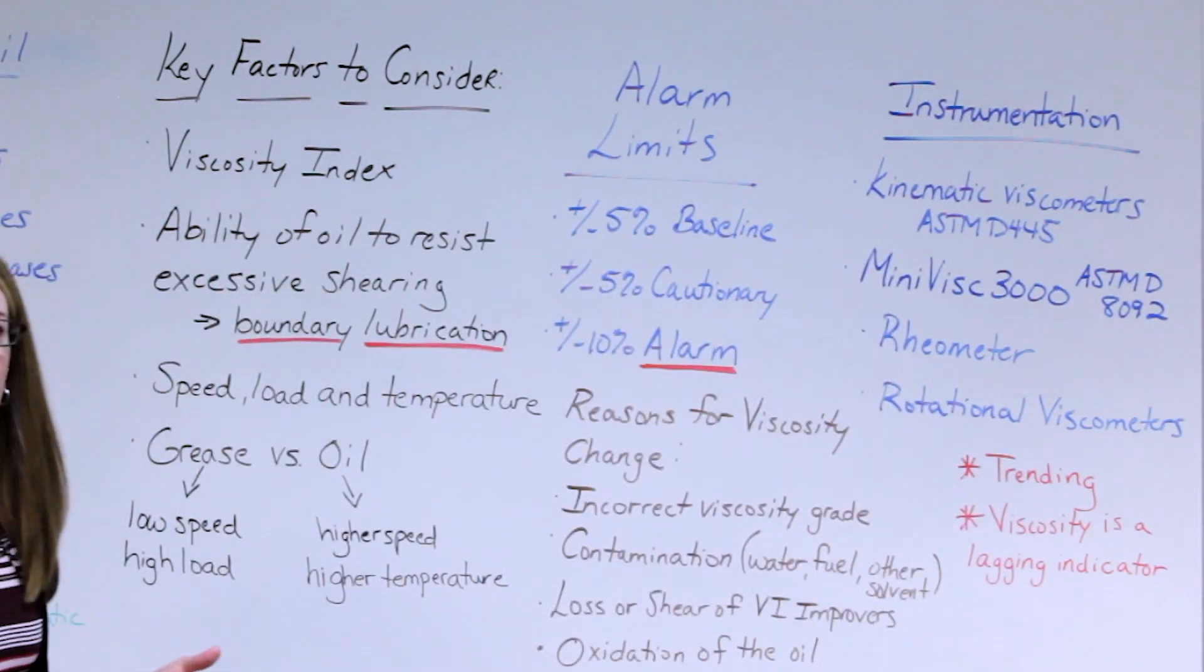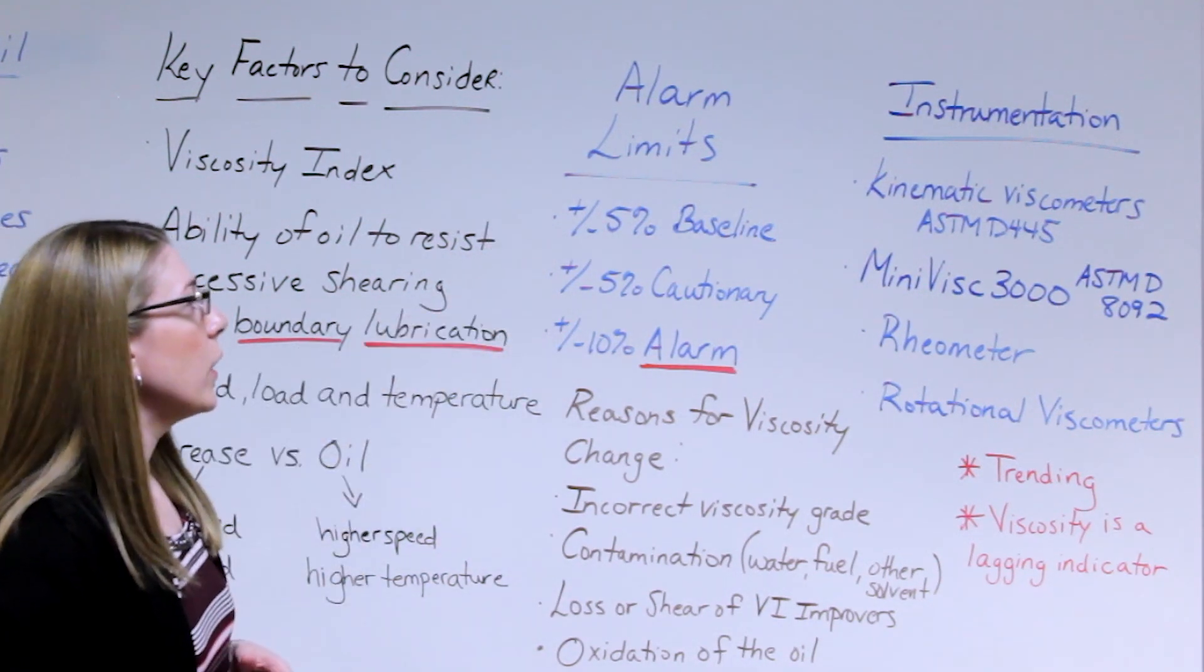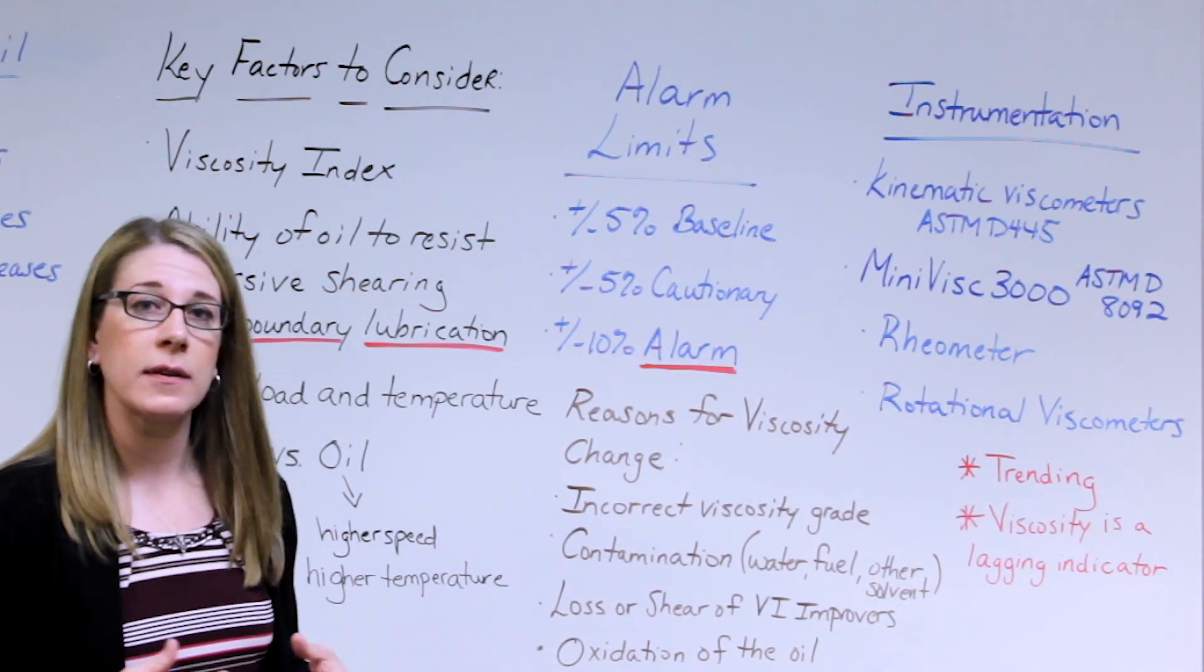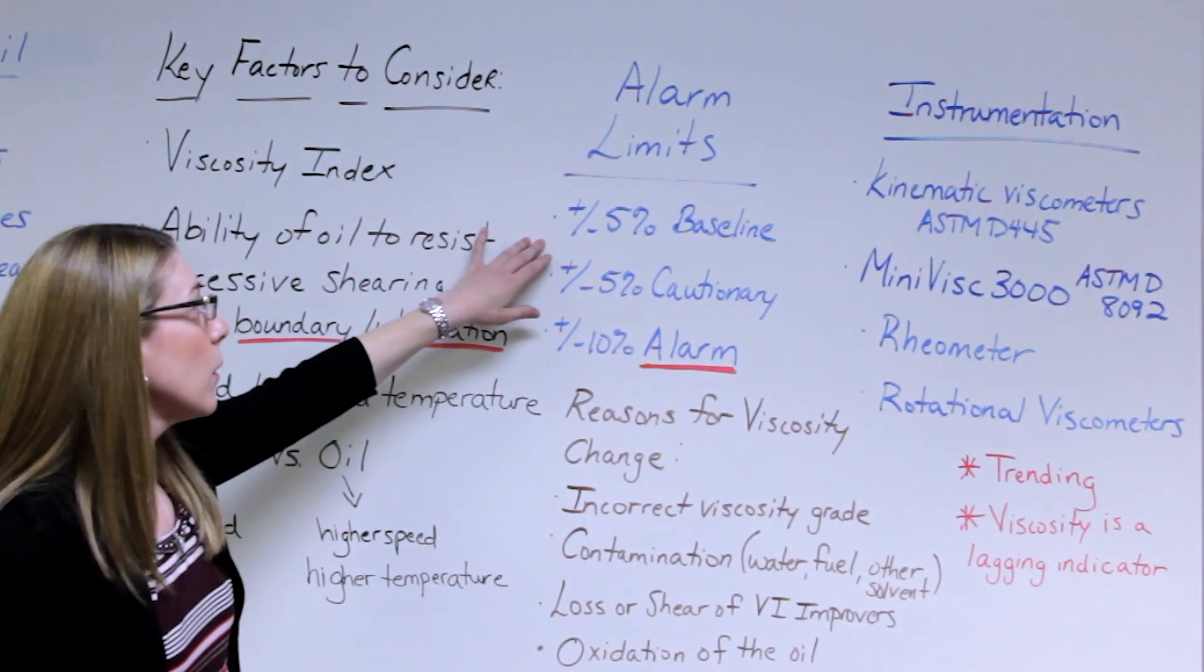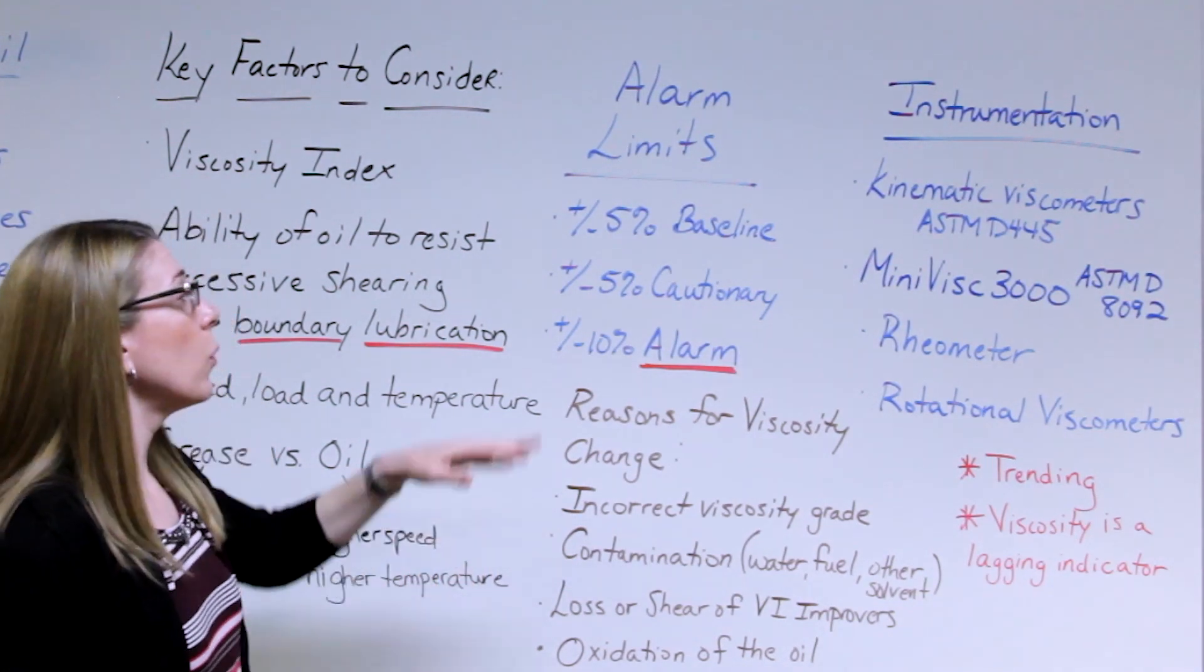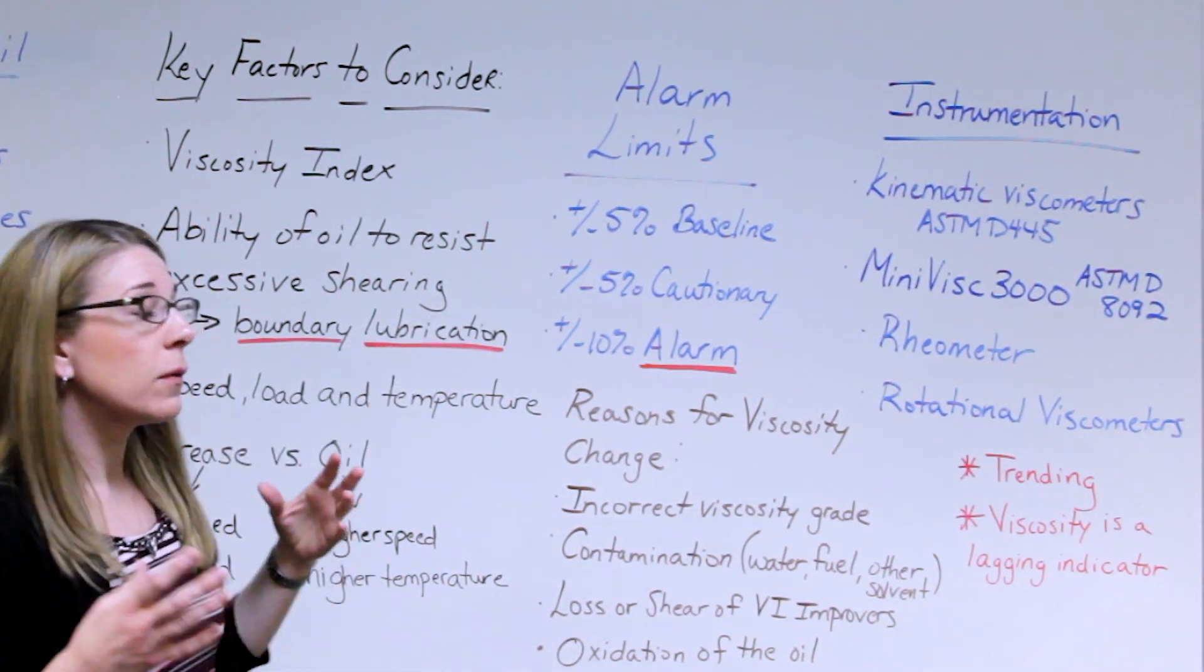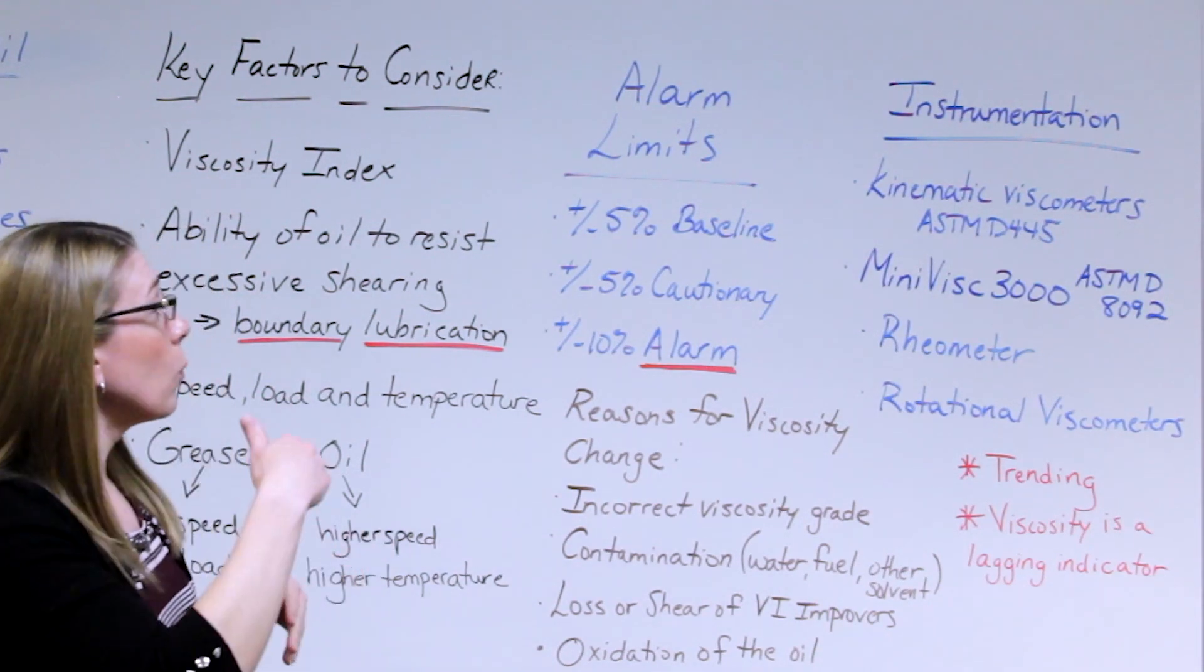How do we go about setting alarm limits for viscosity? It's very important that we always take a reading from the baseline oil, the brand new oil, before we start to trend any viscosity changes. Typically when oil is blended it has the ability to be plus or minus five percent of what that value is. For example, an ISO 32 oil has a range of what that viscosity could be. So it's important to understand what that is so we can benchmark where we need to be when we're trending.